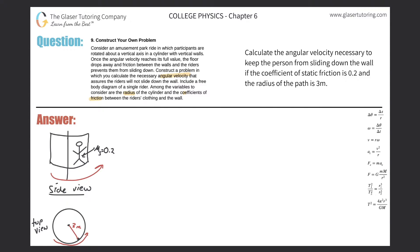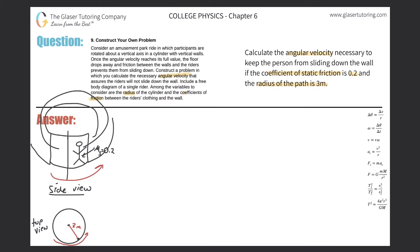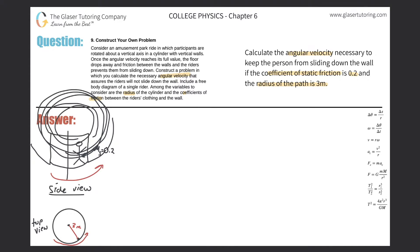The problem says: calculate the angular velocity necessary to keep the person from sliding down the wall if the coefficient of static friction is 0.2 and the radius of the path is three meters. This amusement park ride is kind of like the Gravitron — it's like a big cylinder-shaped thing where you rotate around. This is a side view.